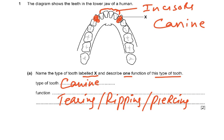Tearing, ripping, or piercing are all correct. Chewing is not correct — do not use that word for any question about teeth. When you chew gum, you can have it in your mouth for hours and it won't break into pieces. So chewing is a word which is not allowed.